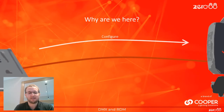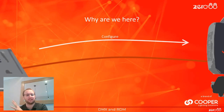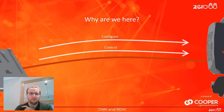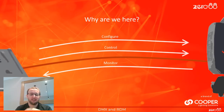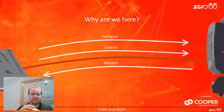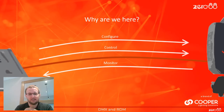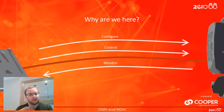Down this cable, I would argue there are three things we want to be able to do. We want to be able to configure our lights. We want to be able to control our lights. And we want to be able to monitor our lights — we want to know what's going on. And if we can do all of these three things, then we're in a really good position. We're going to look at how we can do all of these using DMX and RDM today.